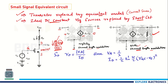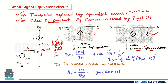R₀ can be written as V_A divided by I_D, where V_A equals 1/λ, and V_A and λ are channel length modulation parameters. I_D equals (1/2)K_N'(W/L)(V_GS - V_T)². R₀ is in the range of 10 kΩ to 1000 kΩ. Including channel length modulation, the voltage gain expression becomes minus G_M times (R_D parallel with R₀).